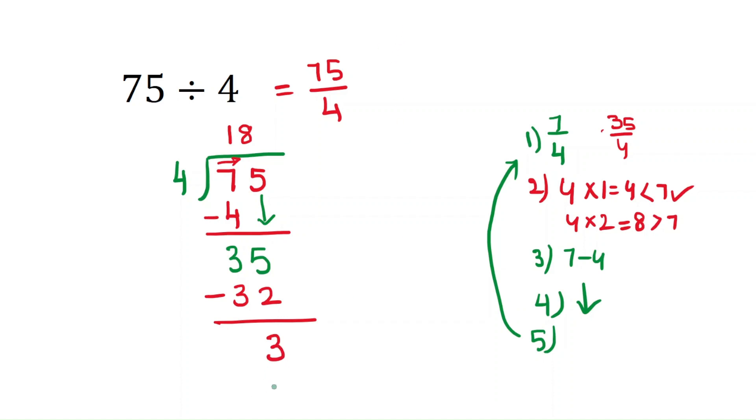So here always the remainder is less than divisor. Here you don't have any digits to bring down. It will be called the remainder.